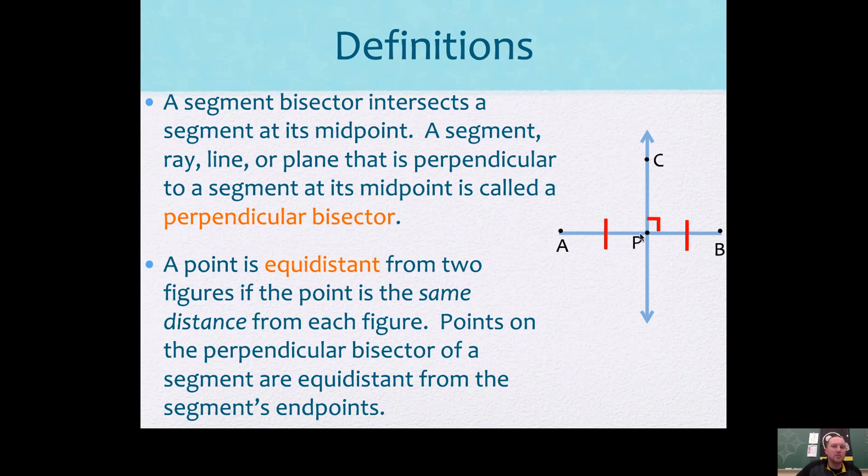So if something is a perpendicular bisector, you need that right angle, and you need the fact that this point is a midpoint. You would need these congruent marks.